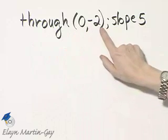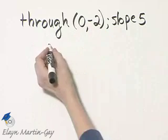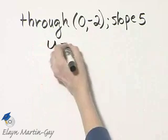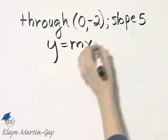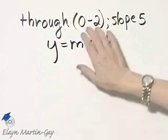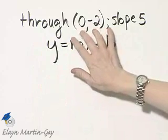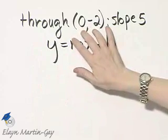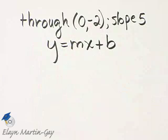If you notice that this happens to be the y-intercept, you can use this form, y is equal to mx plus b. Now we're only able to use this form because this happens to be the y-intercept that we were given. So let's use this form, the slope-intercept form.